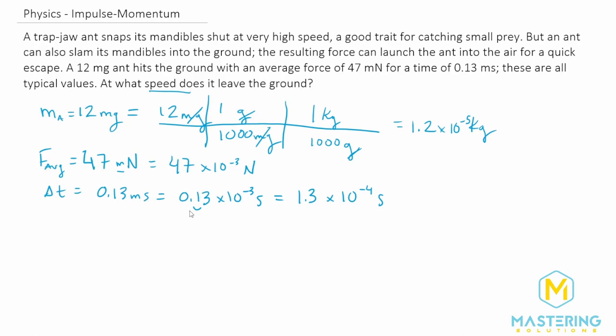So now we have all of our units that we need written down and all of our variables that we need written down. So now let's write down the equation that we need for this one. Obviously, we're going to be using impulse, which is equal to the average force times the change in time, which is also equal to the change in momentum.